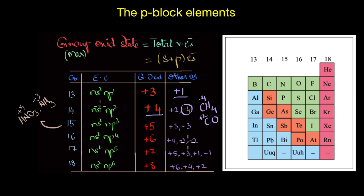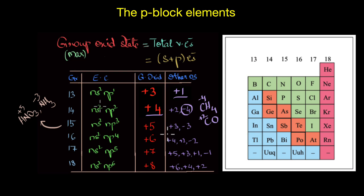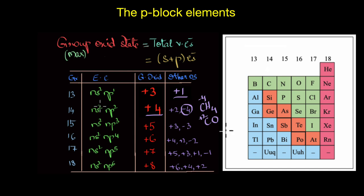Just like nitrogen, phosphorus also has many compounds in which it exhibits +5, +3, as well as −3 oxidation states. As you go across the p-block, elements tend to show more oxidation states. In contrast to s-block elements — where group 1 always shows +1 and group 2 always shows +2 — p-block elements tend to exhibit multiple or variable oxidation states. This is a very significant feature of p-block elements.